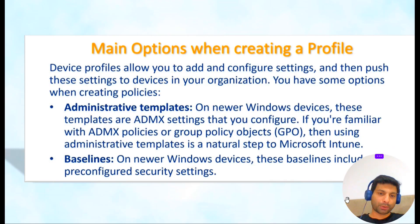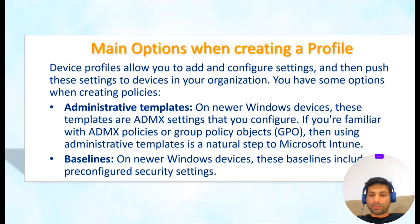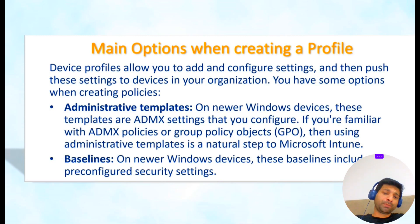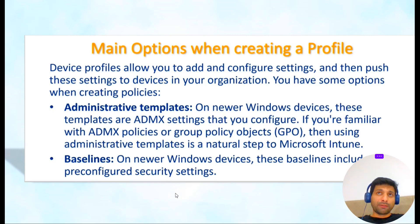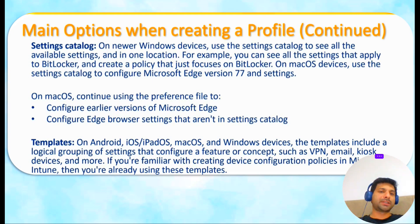The main options when creating a profile: device profiles allow you to add configuration settings and push them to devices in your organization. You have options like Administrative Templates — the same administrative templates found in GPO. If you are familiar with using ADMX policies in GPO, it is very easy to manage in Microsoft Intune. There is also something called Security Baselines for newer Windows devices, which include pre-configured security settings you can enforce. And there is something called the Settings Catalog, which lets you use all available settings in one location.